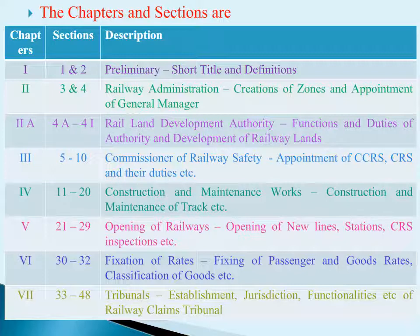Chapter 6: Fixation of Rates has three sections, Sections 30, 31, and 32. In these sections, mainly fixing of passenger fares, fixing of goods fares, classification of goods, etc. are mentioned.